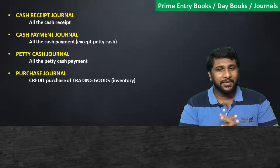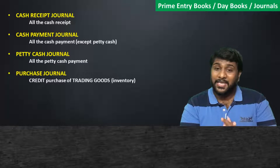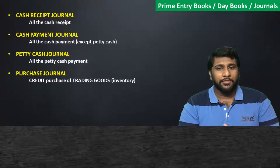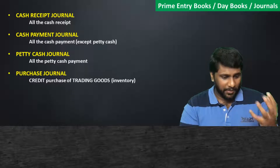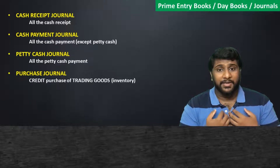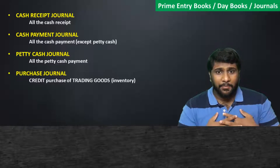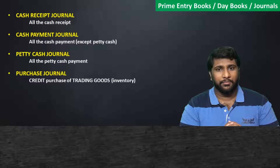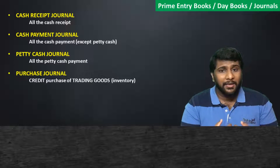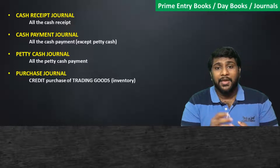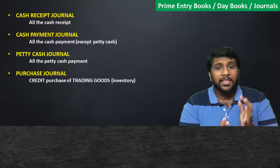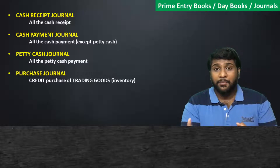The next prime entry book is the purchase journal. Many people make a mistake when it comes to this. In businesses, they will purchase trading goods. For example, if my business is buying and selling tables, then tables are the trading good. But if I purchase a vehicle, the vehicle is not a trading good — it is a non-current asset.